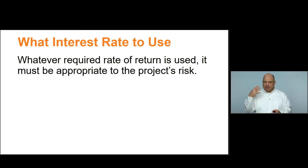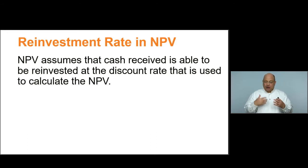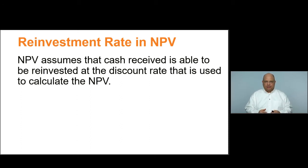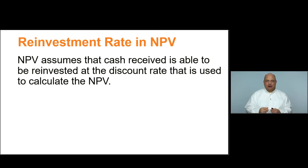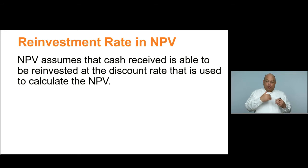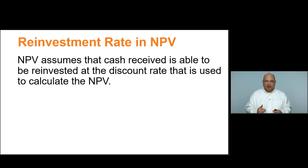One other thing to keep in mind is that under the net present value method, we're making an assumption that the cash we receive is able to be reinvested at that discount rate we're using to calculate the net present value. This may not be true, but it's the assumption we're making. This becomes less likely to be true the higher the discount rate we use — so if we adjust the discount rate up for risk, it's even less likely we'll actually invest those cash flows at that really high rate. This may show up in a question as an assumption about the NPV method.